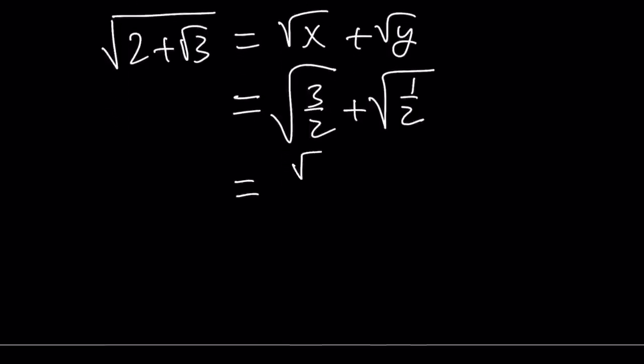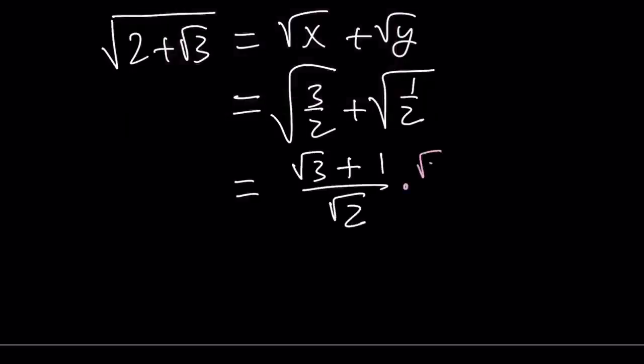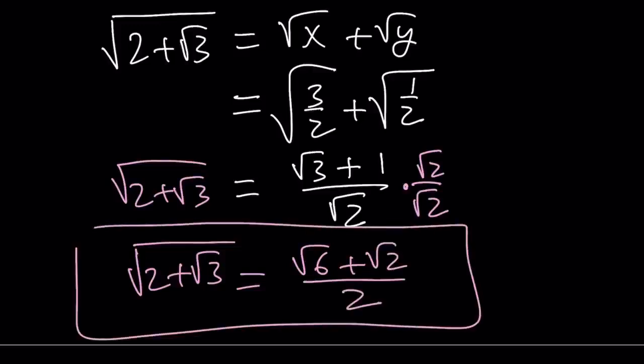Let's go ahead and add them with a common denominator. And then rationalize the denominator. Let's go ahead and multiply the top and the bottom by root 2. And obviously, we're trying to simplify this. So square root of 2 plus root 3 just becomes root 6 plus root 2 over 2. And that ends the first method.